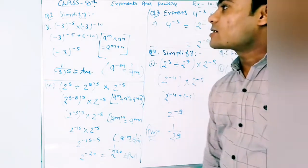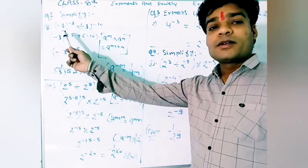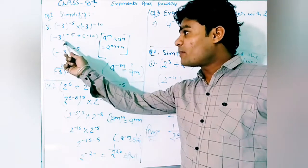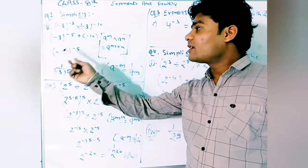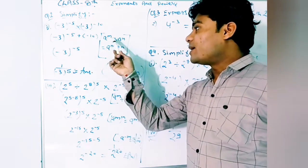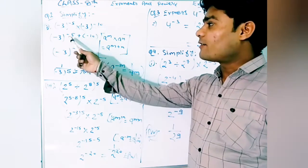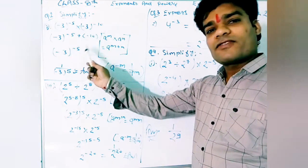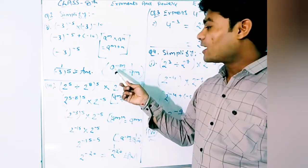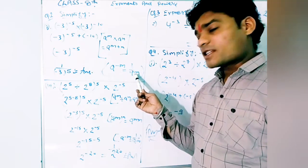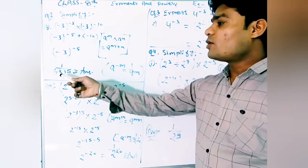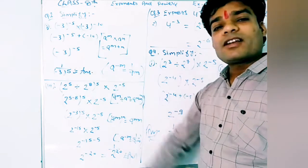Now second question: simplify (-3)^(-5) multiplied by (-3)^(-10). Here the base is the same, so we add the powers: minus 5 plus minus 10, which gives minus 15. We already read that when base is same and powers are different, we add them. Then since the power is negative, we apply the reciprocal law: the answer is 1 upon (-3) raised to the power 5.